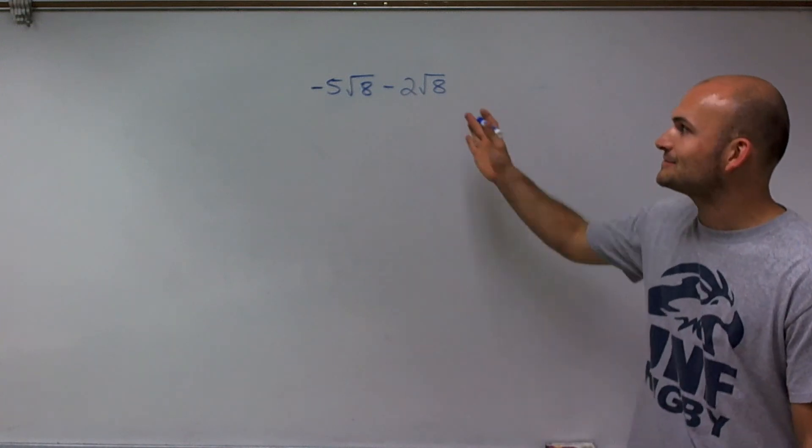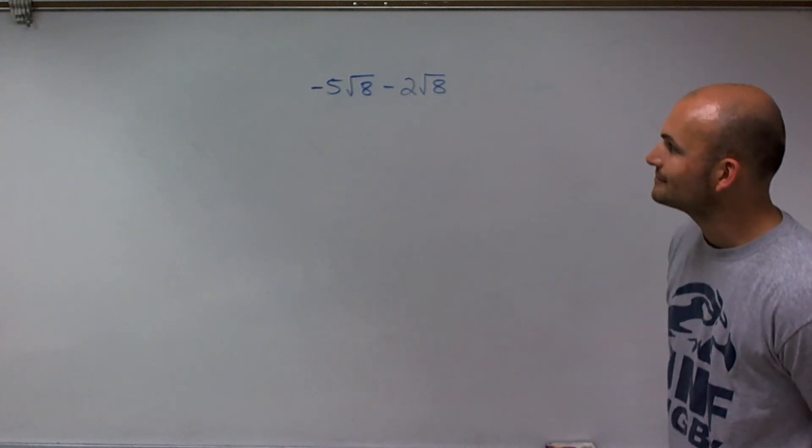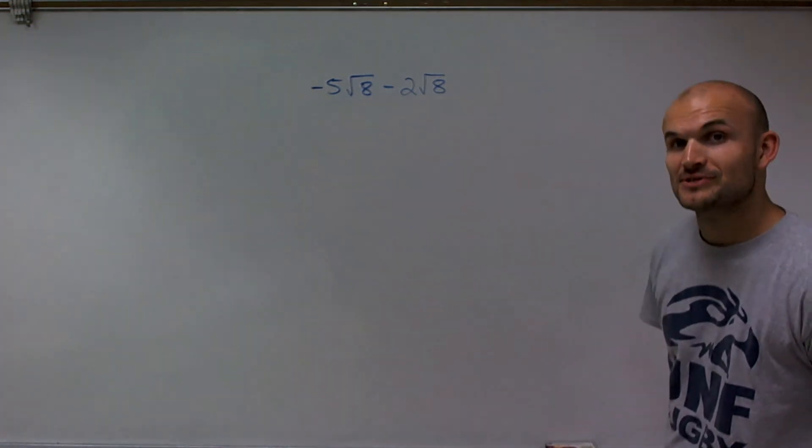Welcome. What I want to do today is show you how to simplify radical expressions. So what we have here is negative 5 times square root of 8 minus 2 times square root of 8.